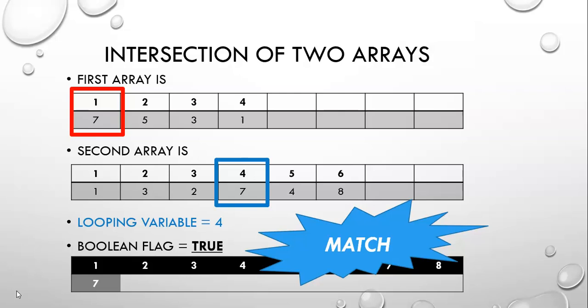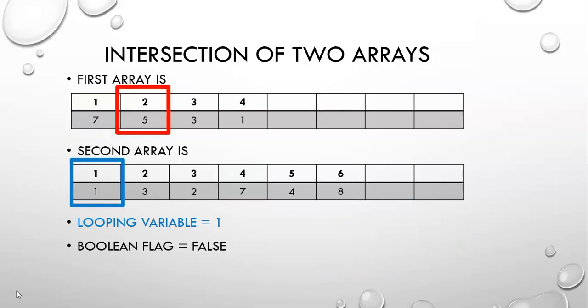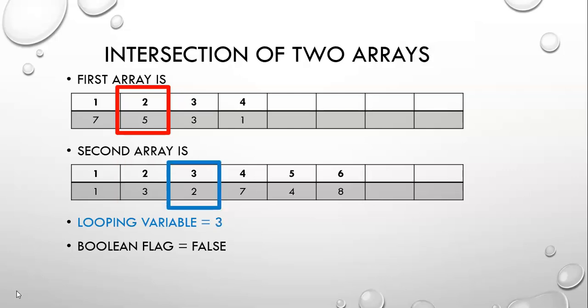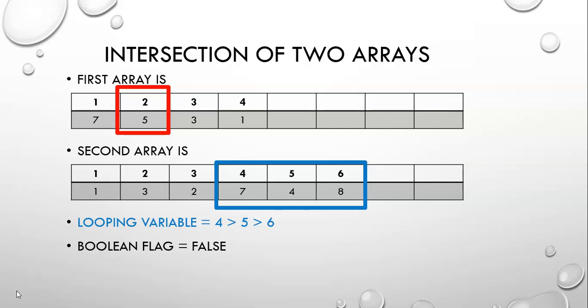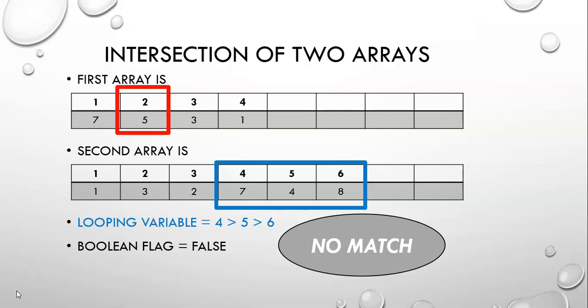We stop the blue loop, reset it back to one, and the for loop moves on to its second value. We reset the second loop to its first position and compare position two of the first array with all values in the second array. That five and one — not a match. Three and five — not a match. Two and five — not a match. The four, five, six, seven, four, eight in the second array are definitely not five. So all are not matches. In this case, we reach the end of the second array without changing the boolean flag.